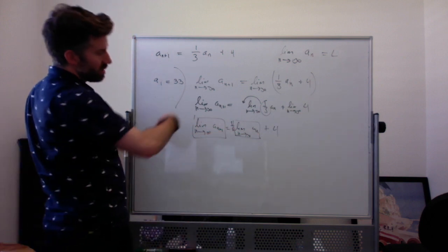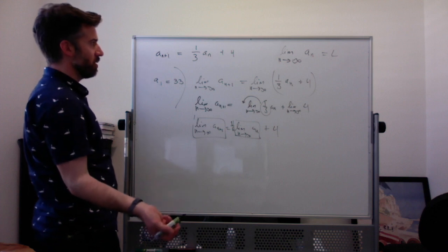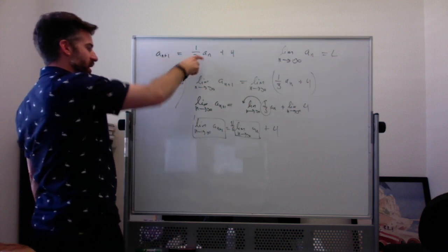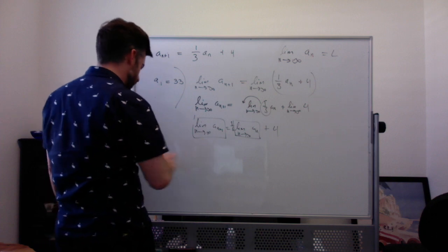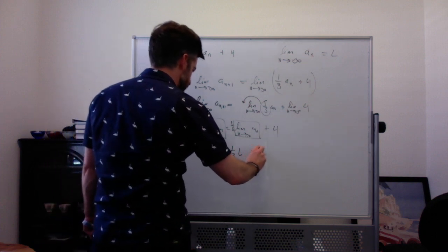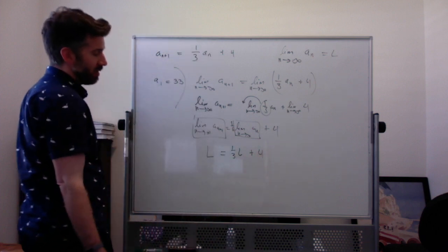So you can do all this, but what it ends up being is just taking your original equation and replacing the A sub n plus 1 and the A sub n with L. So I've got L equal to 1 third L plus 4. And then I'm going to solve for L.